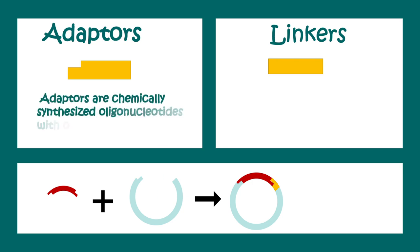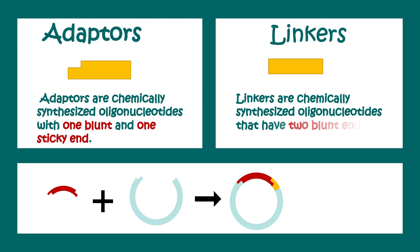Adapters are chemically synthesized oligonucleotides which have one blunt end and one sticky end, whereas linkers are chemically synthesized oligonucleotides which have two blunt ends. All these sequences are useful for cloning experiments, but how? Let us see.